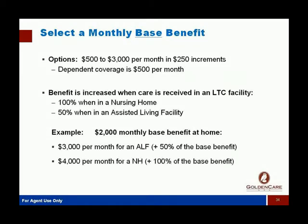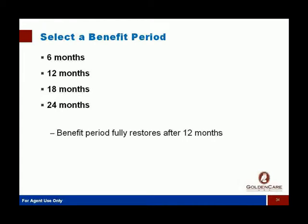Then we put together our plan. You start with a monthly base benefit — in most states it's $500 to $3,000 per month in $250 increments. This policy can also cover dependents at $500 per month. Benefits are increased if you have to go into a long-term care facility: 100% additional benefit for a nursing home, and 50% more for assisted living. For example, if you chose a $2,000 monthly base benefit, it would pay $3,000 per month for assisted living or $4,000 per month for a nursing home.